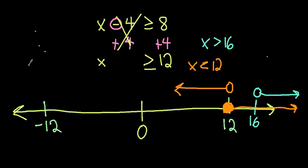So for me, I would write: first I added 4 to both sides, and then I drew a number line.